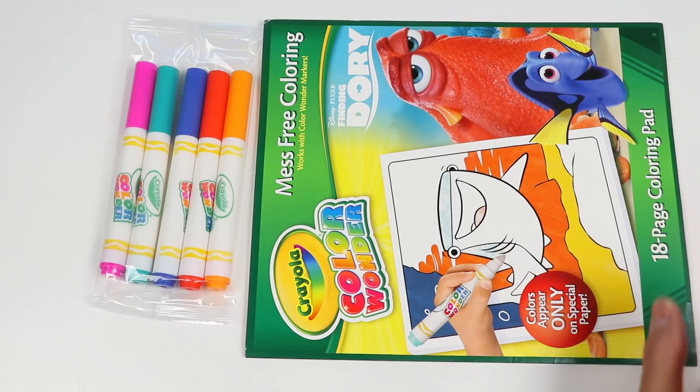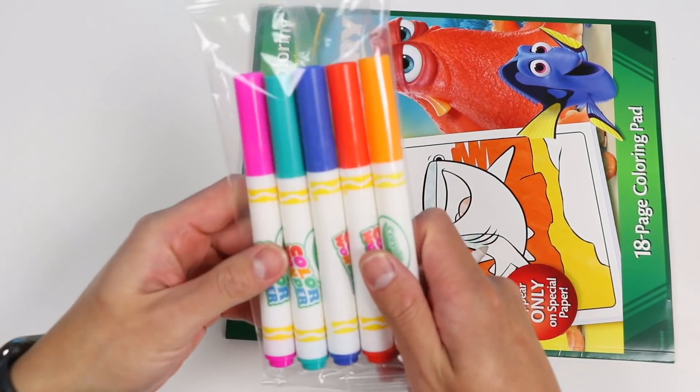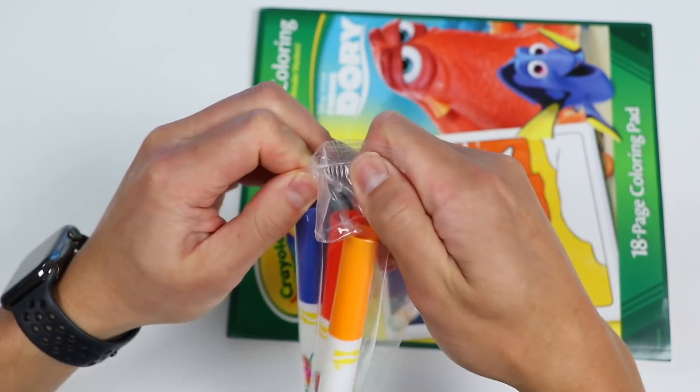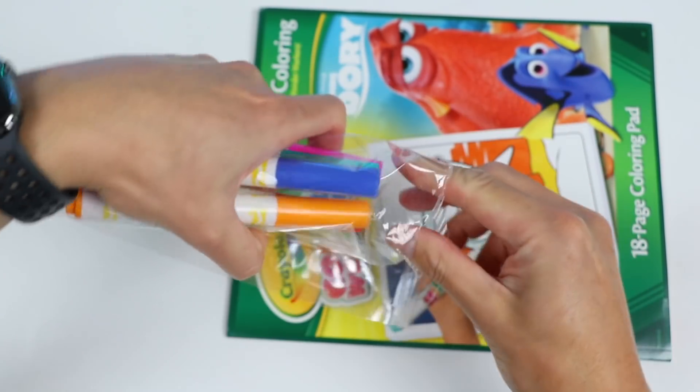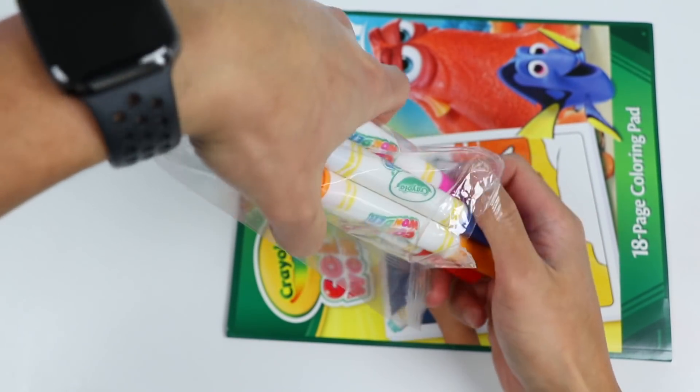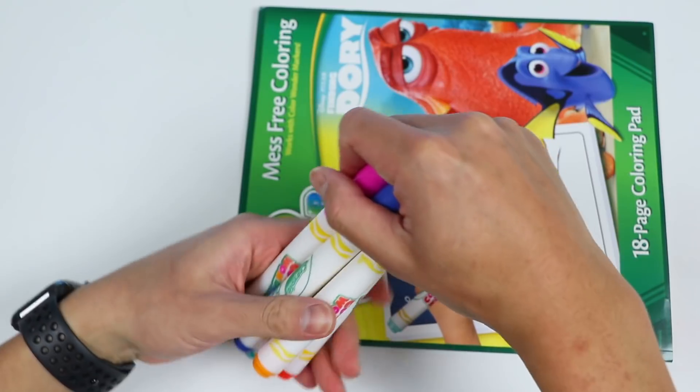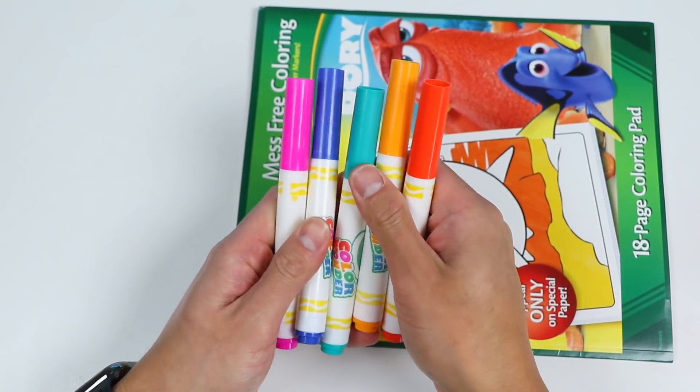Here's our coloring book, and we also get five mess-free markers. This book comes with pink, blue, green, orange, and red.